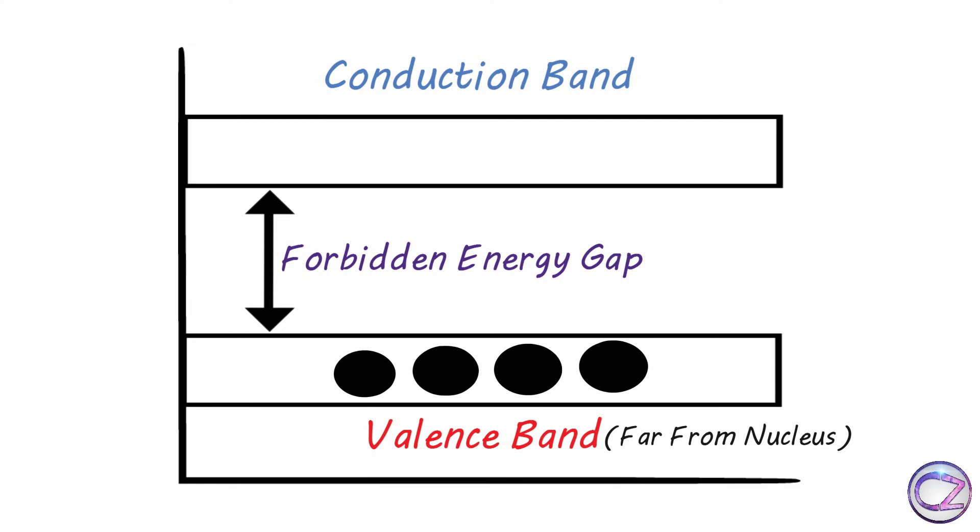Actually valence electrons are loosely attached to the nucleus. If you give specific energy to valence electrons from outside, then these valence electrons jump to the conduction band as free electrons. These free electrons transport electricity.